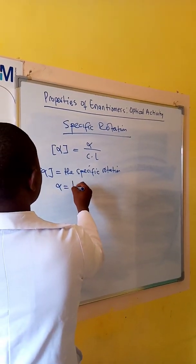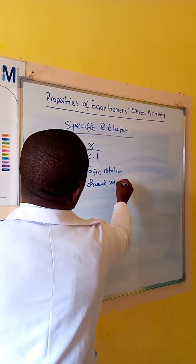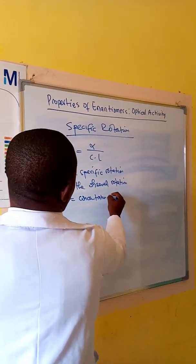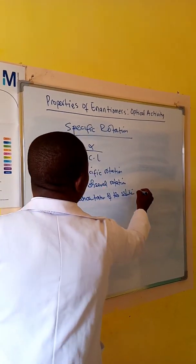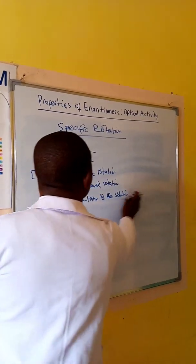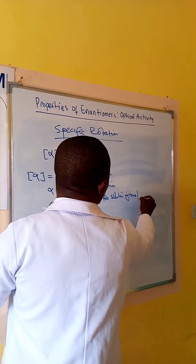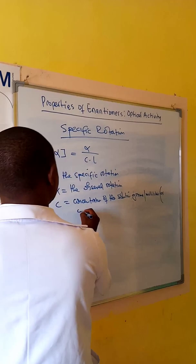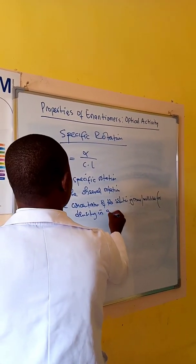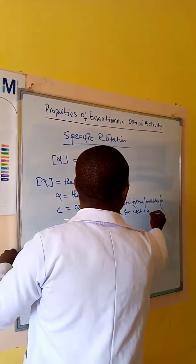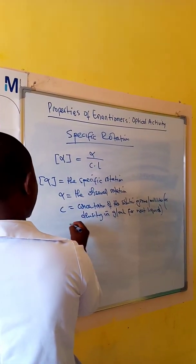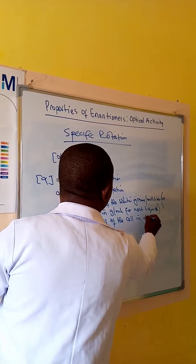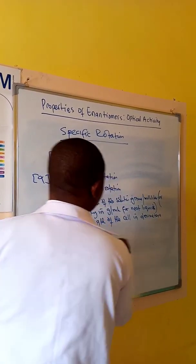Where alpha in square brackets is the specific rotation, alpha is the observed rotation, C is the concentration of the solution in grams per milliliter or density for neat liquids, and L is the length of the cell in decimeters.